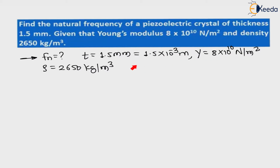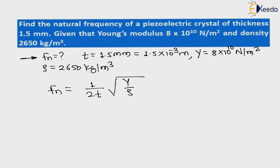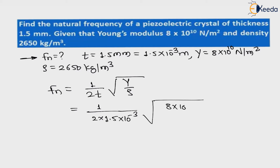All our standard SI units: force in newton, dimension in meter, area in meter square, volume in meter cube, mass in kg, distance in meter. The natural frequency of vibration of any crystal is calculated as fn = 1/(2t) × √(Y/ρ). Let us put the values: 1 / (2 × 1.5 × 10⁻³) × √(8 × 10¹⁰ / 2650).